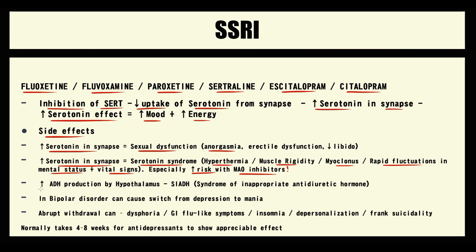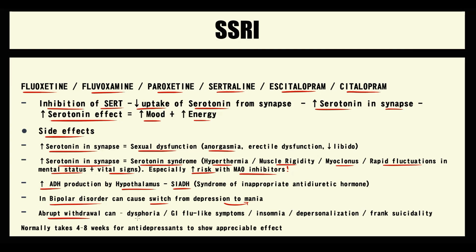Stimulation of serotonin receptors can cause increased production of antidiuretic hormone by the hypothalamus, which can cause syndrome of inappropriate antidiuretic hormone secretion. In addition, SSRIs in patients with bipolar disorder can cause a switch from depression to mania. Abrupt withdrawal of SSRIs can cause withdrawal syndrome, manifesting as dysphoria, GI flu-like symptoms, insomnia, depersonalization, and frank suicidality. Also, it usually takes 4–8 weeks for antidepressants to show a clinical effect.